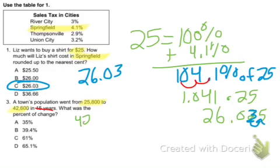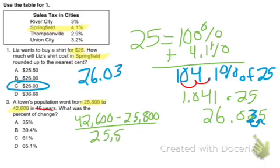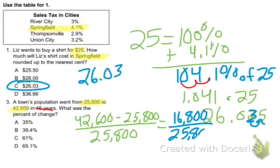So what's the change? $42,600 minus $25,800 over the original, which was $25,800. So $42,600 minus $25,800 is $16,800 over $25,800.